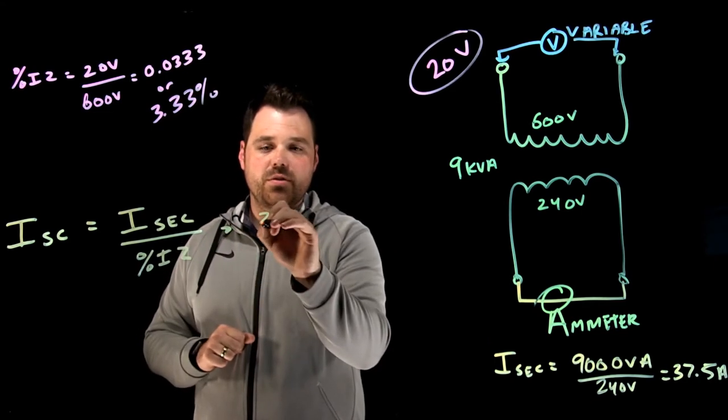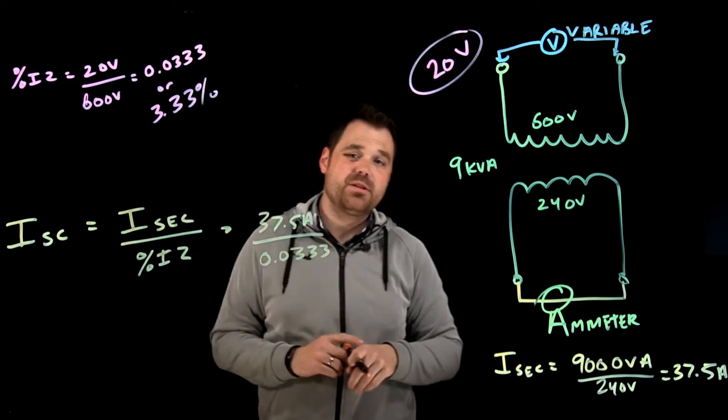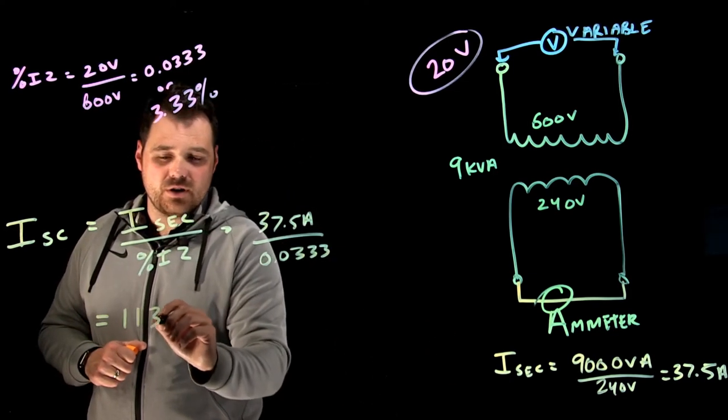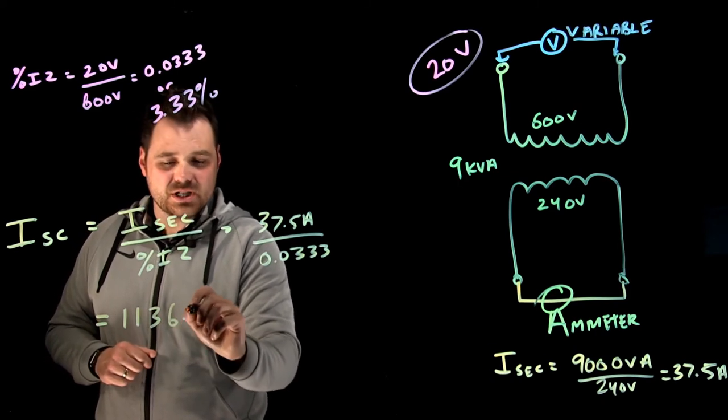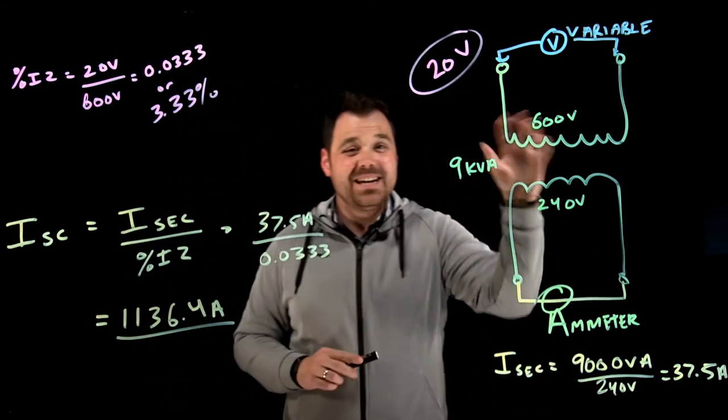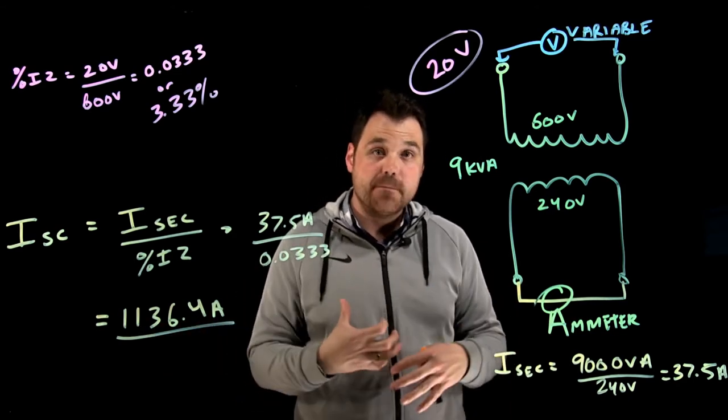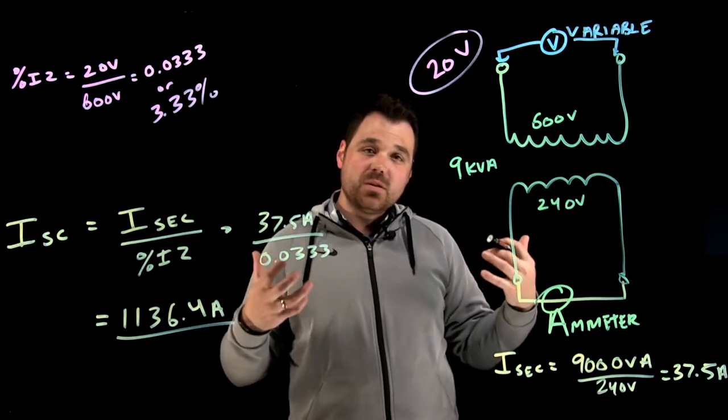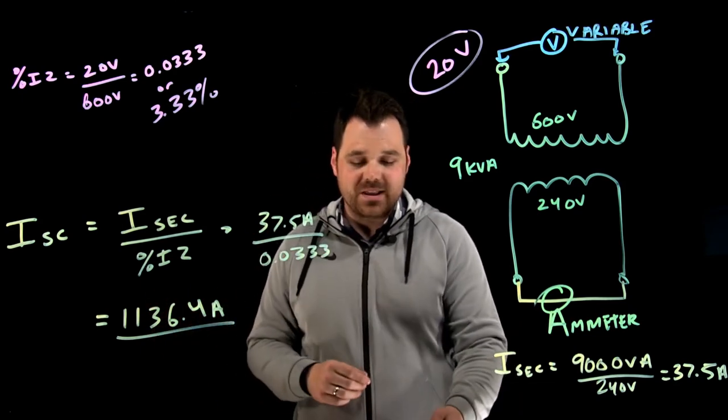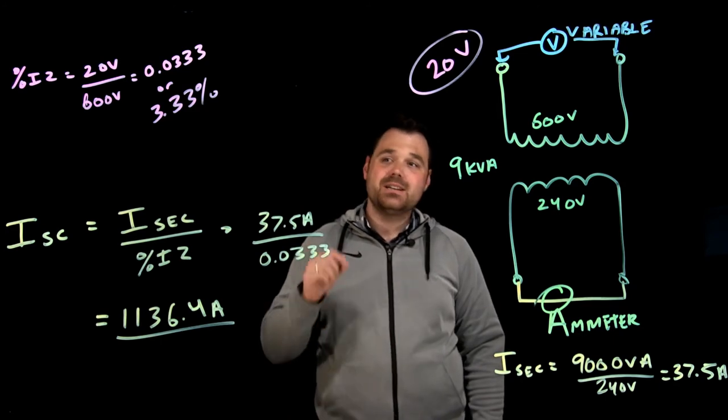So in this case, I'm going to go 37.5 amps divided by 0.0333 or 3.33 percent. That gives me my short circuit current. In this case, it's about 1136.4 amps. That is a huge number. This transformer, the impedance of the transformer is going to limit my short circuit current to 1136 amps. So the impedance of the transformer is all that's standing in the way. I know along with the impedance of my short circuit path, but that right there is what I have available as a secondary fault current on this transformer. That's one of the reasons that calculating this percent IZ can be so important.